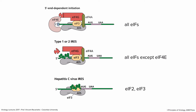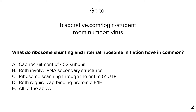Quiz question: what do ribosome shunting and internal ribosome initiation have in common? The answer is B—both involve RNA secondary structures. The IRES doesn't need a cap, so cap recruitment is wrong. Neither involves scanning through the entire 5' UTR. Only canonical ribosome scanning requires eIF4E, so B is correct.